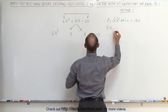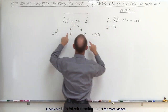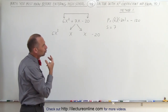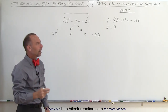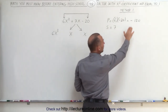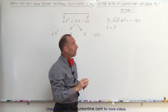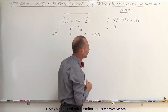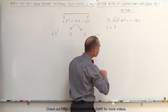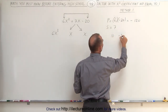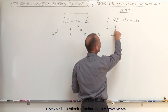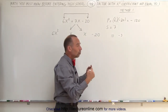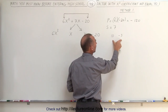And the sum must equal 7. Whenever you pick these two numbers and add them together, you should get back the original middle term. So you're looking for two numbers whose sum is 7 and whose product is negative 120. The fact that the product is negative means one number must be positive and one must be negative. And since the sum is a positive 7, the positive number must be bigger than the negative number.